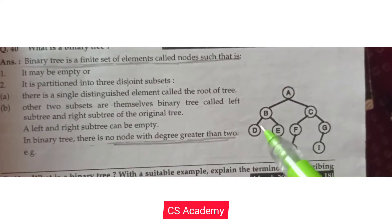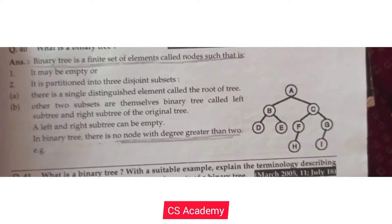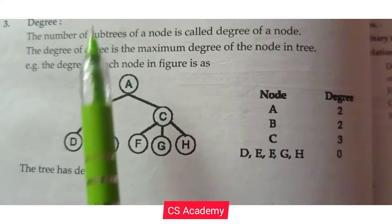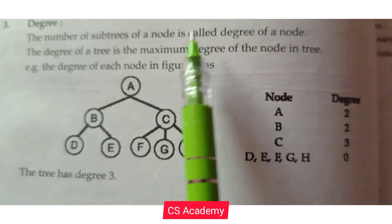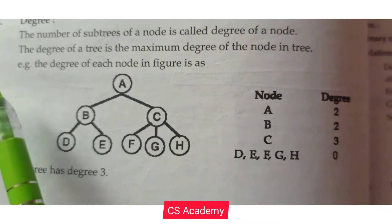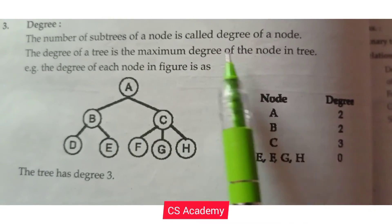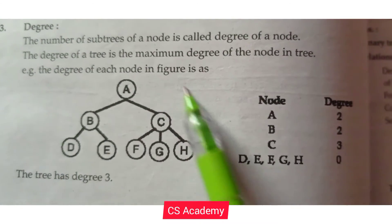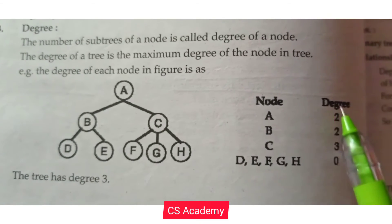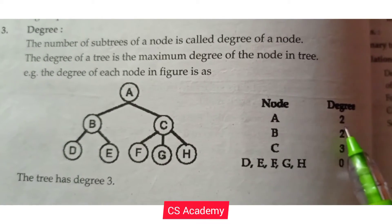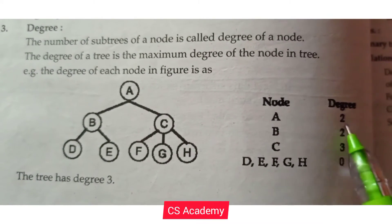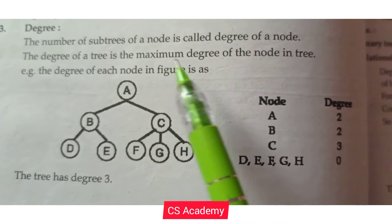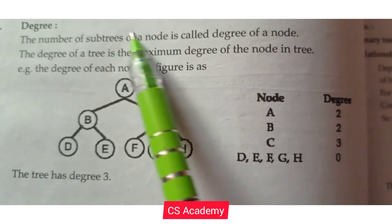What is meant by degree? The degree is the number of subtrees of a node — that is called the degree of that node. The degree of a tree is the maximum degree of any node. For example, node A has degree 2, meaning it has a maximum of two subtrees.